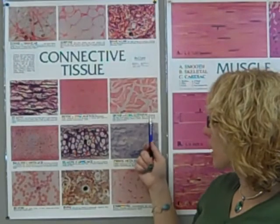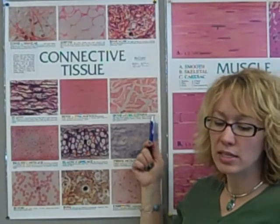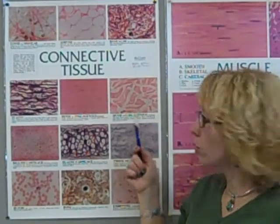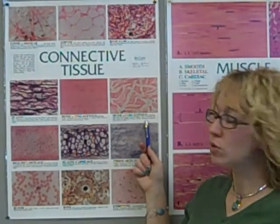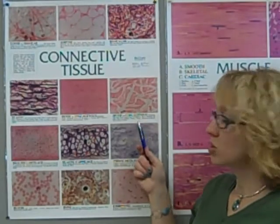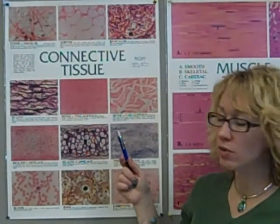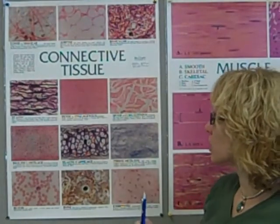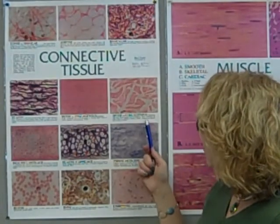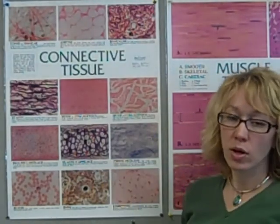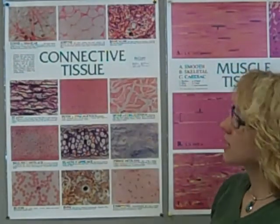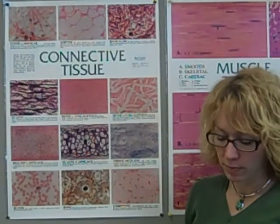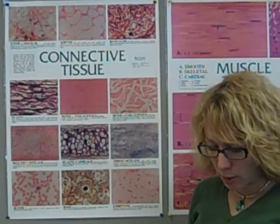Dense fibrous connective tissue is found in places where you really need to bind and support — for example, the dermis, which is part of the integumentary system and sits just deep to the epidermis of your skin. It's also found in the submucosa of the digestive system, which is a layer just inside the epithelial lining, helping to bind. So dense fibrous appears in several important locations throughout the body.